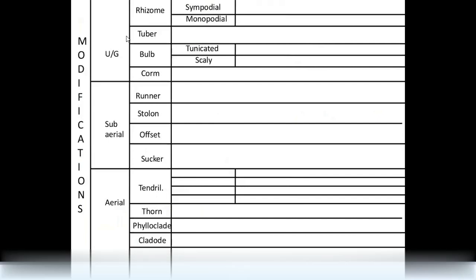To summarize: underground stem modifications include rhizome — which can be sympodial or monopodial — tuber, bulb (tunicate or scaly), and corm. Sub-aerial modifications include runner, stolon, offset, and sucker. Aerial modifications include tendril, thorn, phylloclade, cladode, and bulbils.